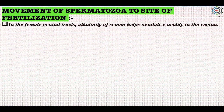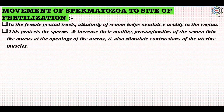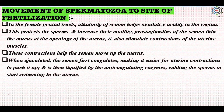Regarding the movement of spermatozoa to the site of fertilization: in the female genital tract, alkalinity of the semen helps neutralize vaginal acidity, protecting sperm and increasing their motility. Prostaglandins in semen thin the mucus at the opening of the uterus and stimulate contraction of uterine muscles to help semen move up the uterus. When ejaculated, semen first coagulates, making it easier for uterine contractions to push it up, and is then liquefied by anticoagulating enzymes, enabling sperm to swim in the uterus. They then reach the oviduct where the sperm are capacitated — attaining the ability to penetrate the ovum — and in the ampulla of the oviduct, an ovum may be fertilized.